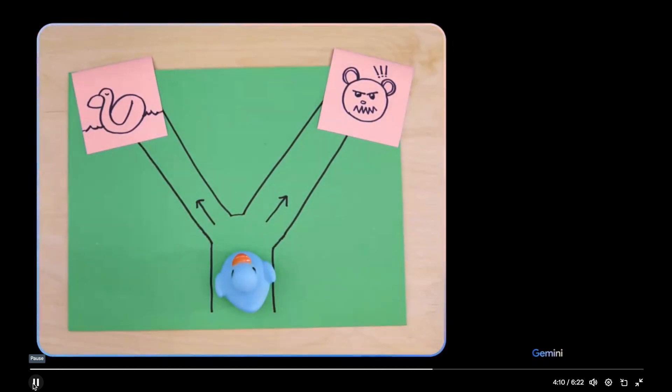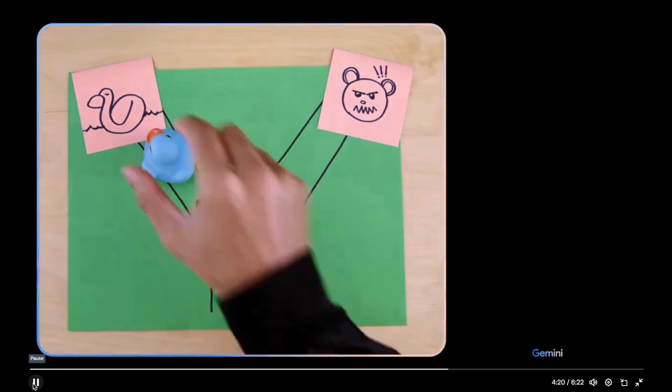Which way should the duck go? Going left leads to a duck, which is a friend. Going right leads to a bear, which is a foe. It is better to make friends than foes. So the duck should go left. Smart choice.